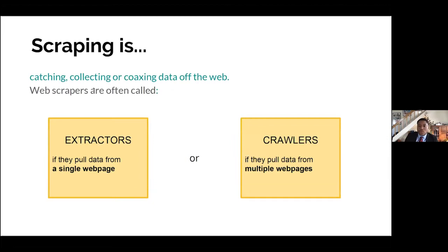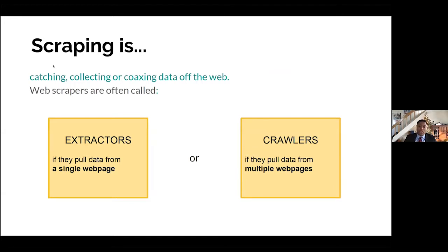There are two types of scraping: extractors and crawlers. Extractors pull data from a single web page, whereas crawlers pull data from multiple web pages. The Wayback Machine is a crawler — since the early days of the internet, it has crawled and taken screenshots of every web page that exists. If you want to pull data off just one single page, that's an extractor.